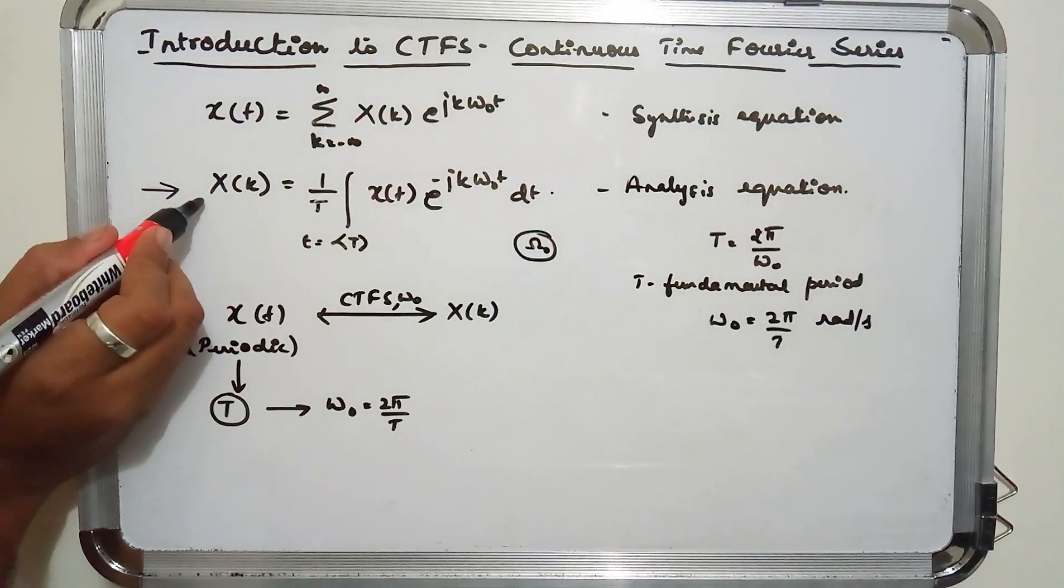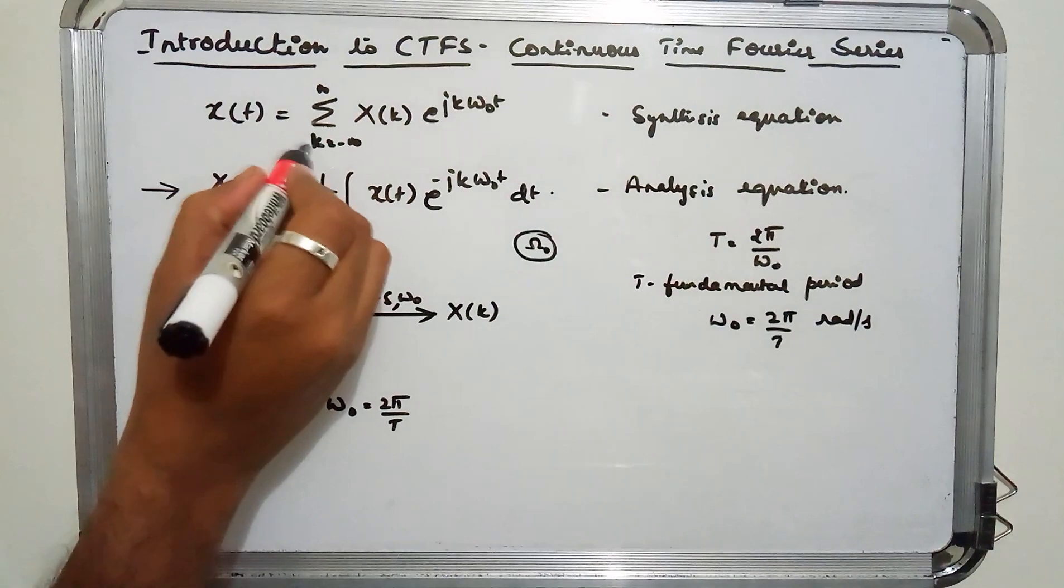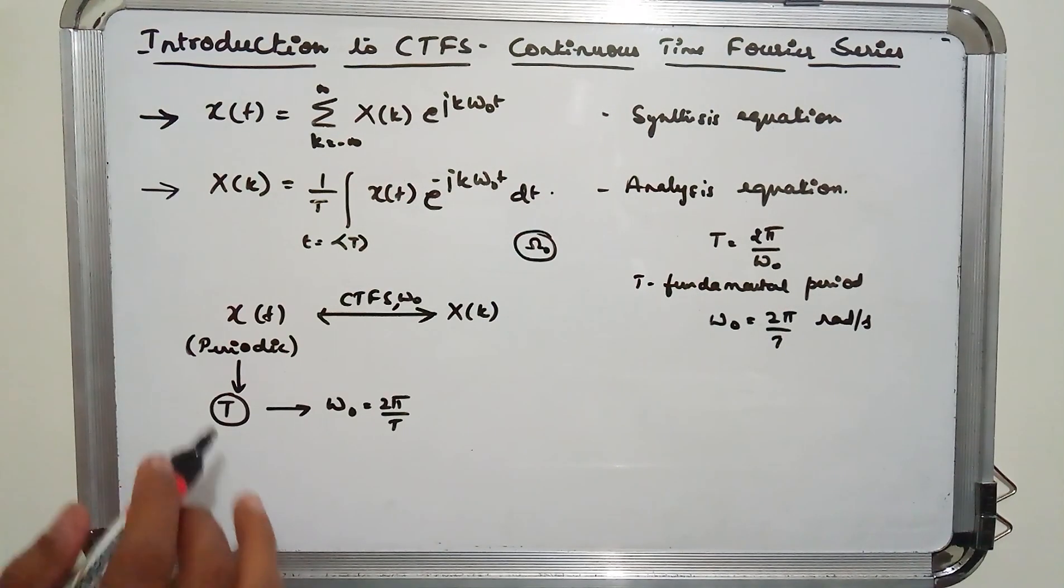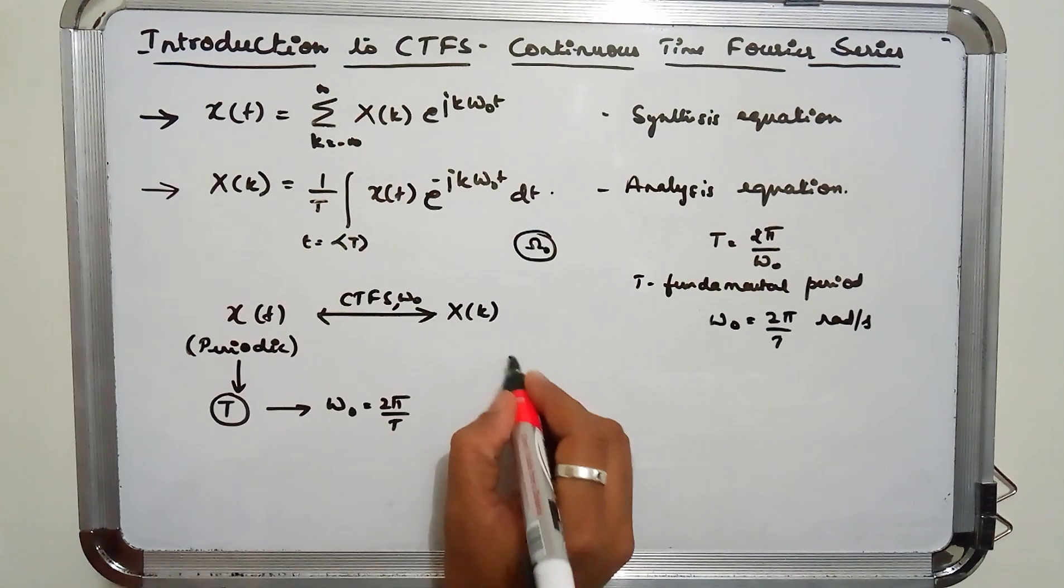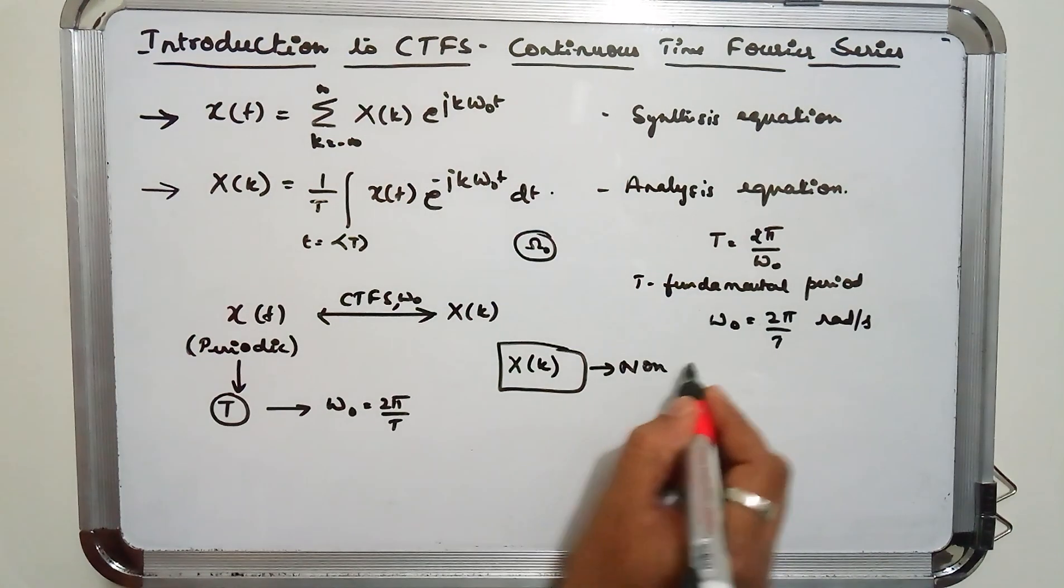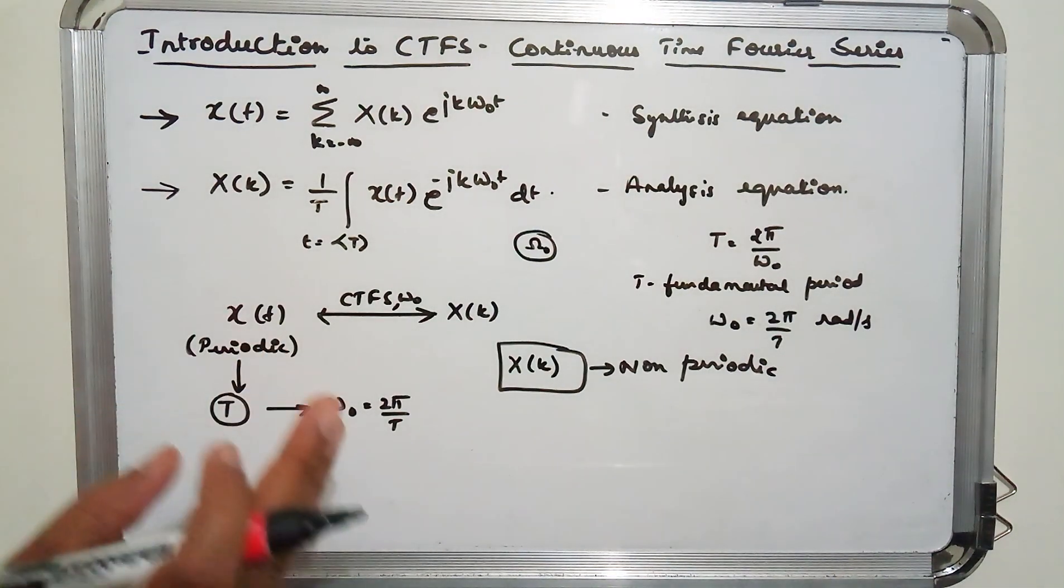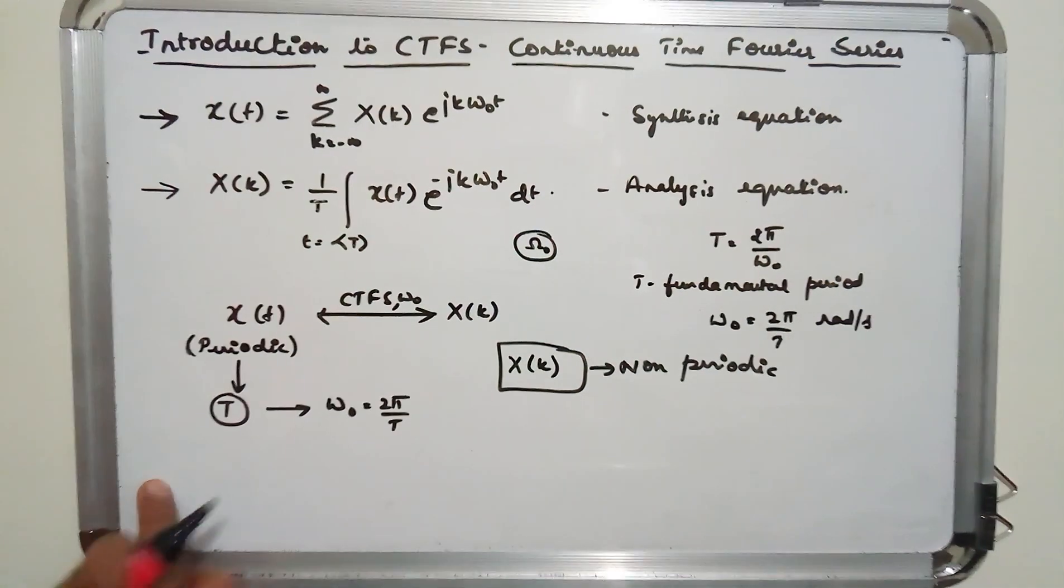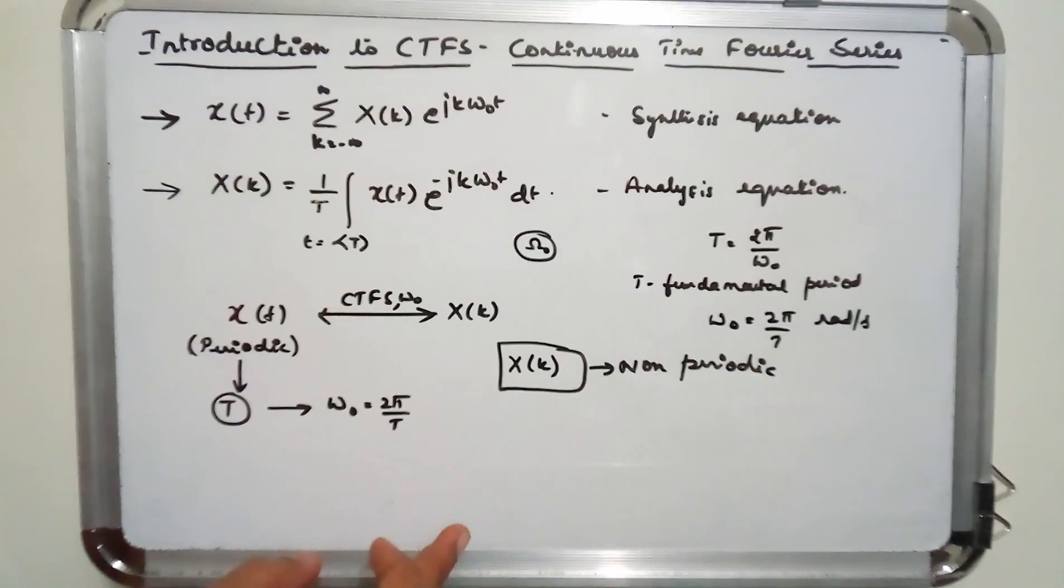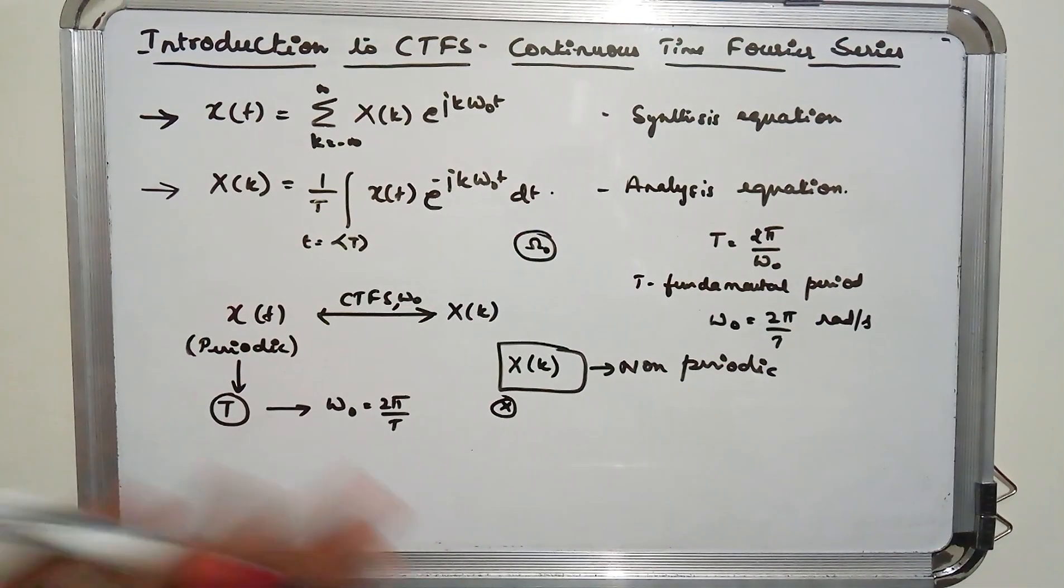Now once we have got this, how do we get back my original signal X(t)? So that is given by the equation here which is summation. Now remember, even though your X(t) is periodic, X(k) is non-periodic. This is the fundamental difference between DTFS and CTFS.